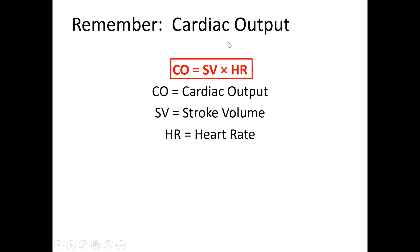Going back to our formula, cardiac output equals stroke volume times heart rate. We've established the factors that influence heart rate — that's the sympathetic nervous system, the parasympathetic nervous system, and the hormones epinephrine and glucagon. Now we're going to look at the factors that affect stroke volume, the other variable in this formula for cardiac output.